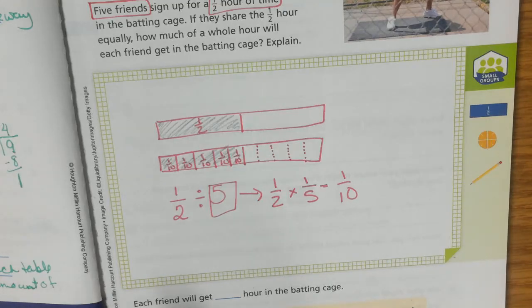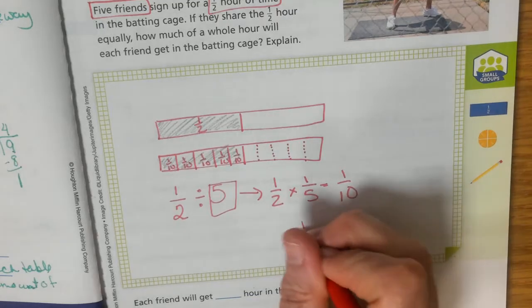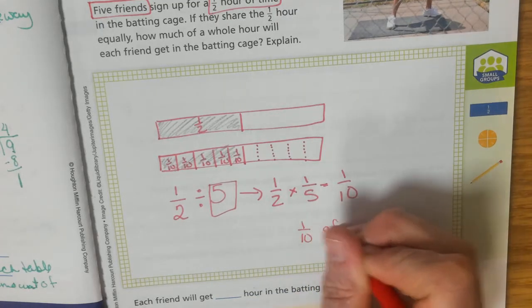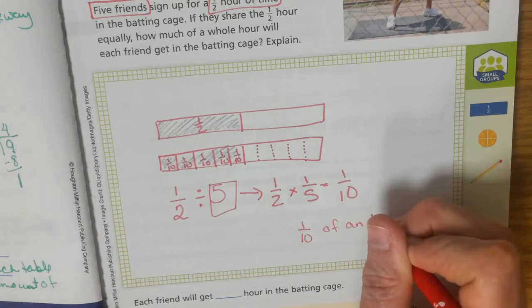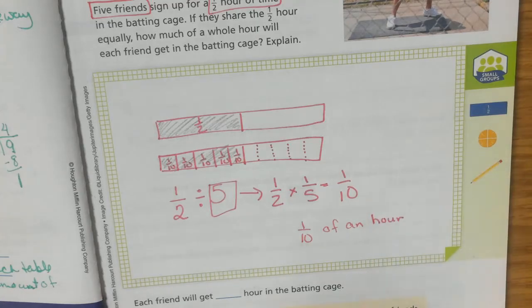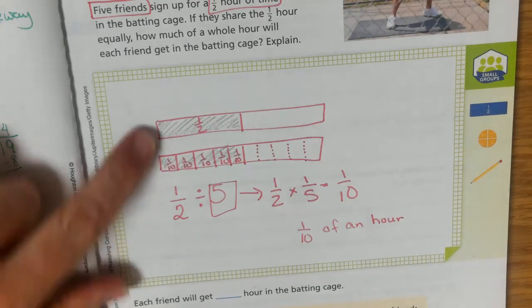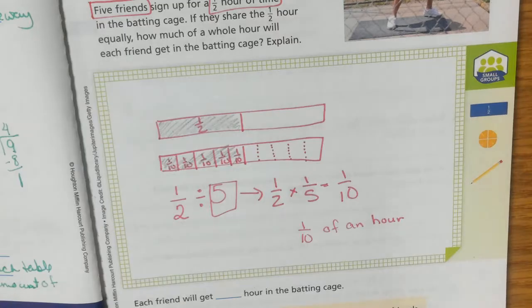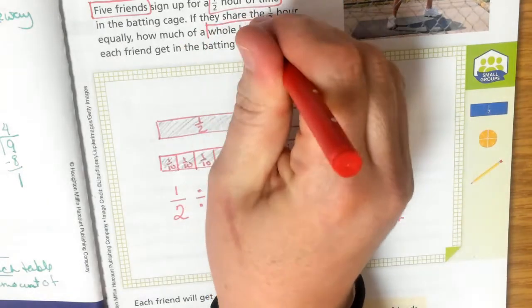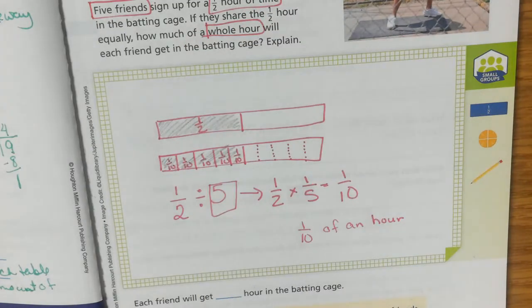So each friend will get one tenth of an hour in the batting cage. They're going to get one fifth of a half an hour, but the question was how much of a whole hour will they get? They're going to get one tenth of a whole hour.